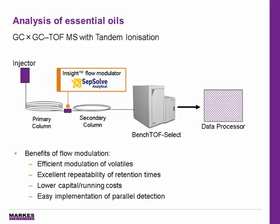In the past, analysis of essential oils and fragrances has been performed by one-dimensional GCMS, with analysts relying on the combination of retention indices and mass spectra in an attempt to identify individual terpenes. However, in recent years, GC×GC TOF has become an attractive alternative. The enhanced separation capacity combined with highly sensitive mass spectra identification gives a high-performance solution for rapid screening of these essential oils.